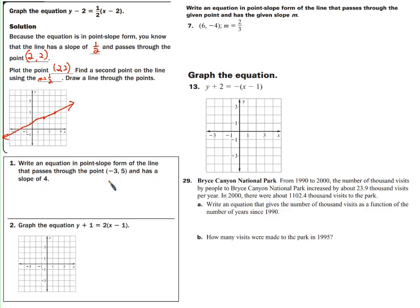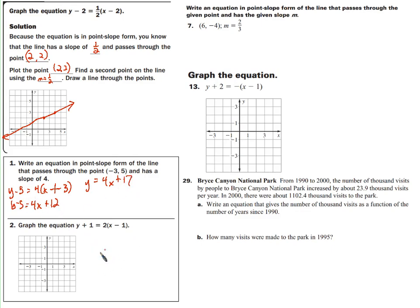Write an equation in point-slope form of the line passing through (-3, 5) with slope 4. We write y - 5 = 4(x - (-3)), which gives y - 5 = 4(x + 3). Distributing: y - 5 = 4x + 12, so y = 4x + 17. For another problem, the equation y - (-1) = 2(x - 1) tells us the point is (1, -1) — because of the minus y1 form — and slope is 2. Plot (1, -1) and go up 2, over 1.